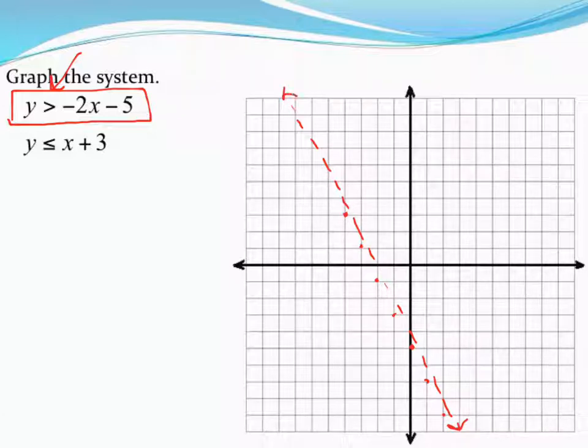For the shading, my trick is I'm going to check the inequality symbol. Because it said greater than, that means above. So with your pencil on the line, draw straight up above, greater than. All that side of the graph is going to be what's shaded.